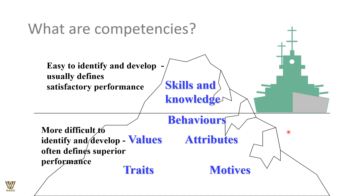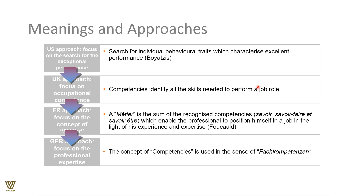Regarding different national approaches: the US approach is basically focused on searching for an exceptional individual with huge potential, qualifications, knowledge, and skills — searching for individual behavior that characterizes excellent performance. The UK approach focuses on occupational confidence — understanding the areas where a person has been exposed, is adequately experienced, and knows things inside out. Competency identifies all the skills needed to immediately perform a job.